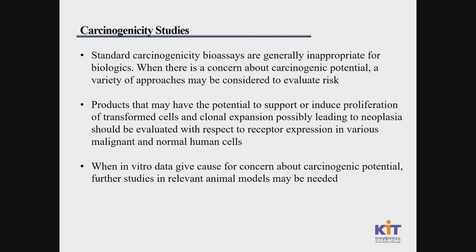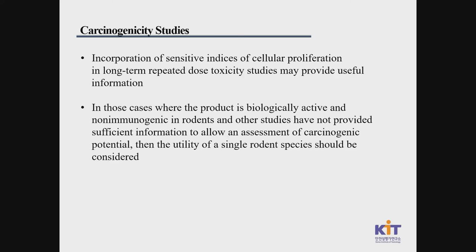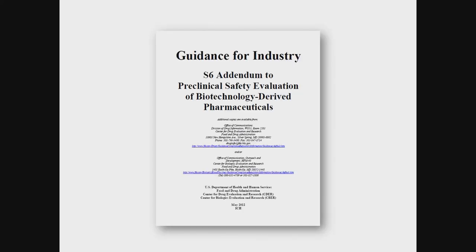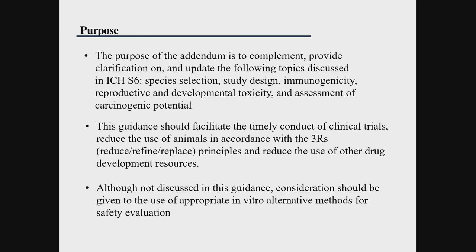For carcinogenicity, testing is not done often. A past example was parathyroid hormone — since the protein was the main substance, the risk was considered low and carcinogenicity testing was not conducted. Usually carcinogenicity studies are not done, but if there are reasons for concern, alternative measures can be taken. For local tolerance studies focusing on the injection site, single-dose or repeat-dose studies cover this through histopathological examination.